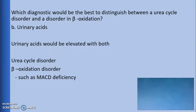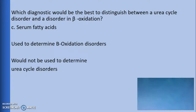The second option is a test for urinary acids. This test is not the best option. While abnormal urinary acid levels are indicative of urea cycle disorders, beta-oxidation disorders can also produce abnormal urinary acids, such as in medium-chain acyl-CoA dehydrogenase deficiency, with the presence of dicarboxylic aciduria. So this would not help to distinguish between the two.